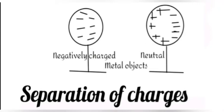If we allow the objects to touch, some of the negative charge will transfer over to the uncharged metal object. This happens since the negative charges on the first object are repelling each other. By moving onto the second, they spread away from each other.